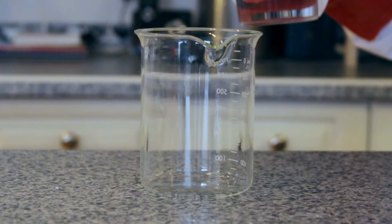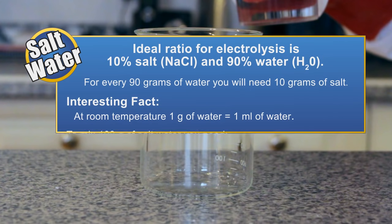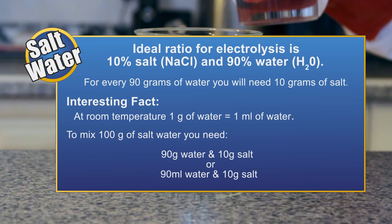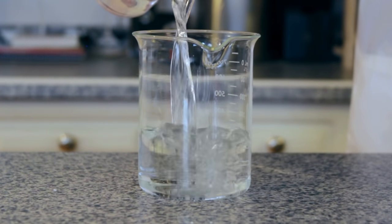The first step in setting up this experiment is to mix together the salt water solution. The ideal ratio of salt water for electrolysis is 10% salt and 90% water. This is best calculated by weight. What this means is for every 90 grams of water, you need to mix in 10 grams of salt.